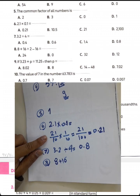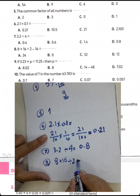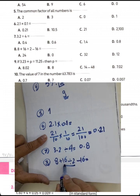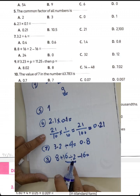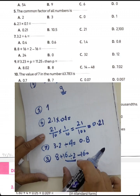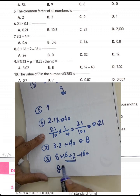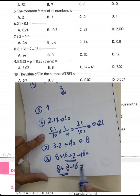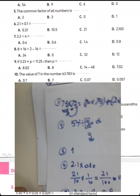Question 8: 8 plus 16 divided by 2 minus 16. Following order of operations — exponents first, then multiplication and division, then addition and subtraction — do the division first: 16 divided by 2 equals 8. Then 8 plus 8 equals 16, and 16 minus 16 equals 0. The result is zero.